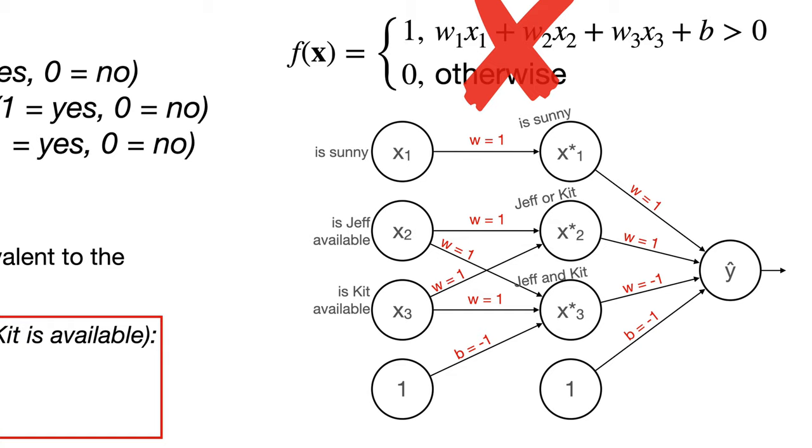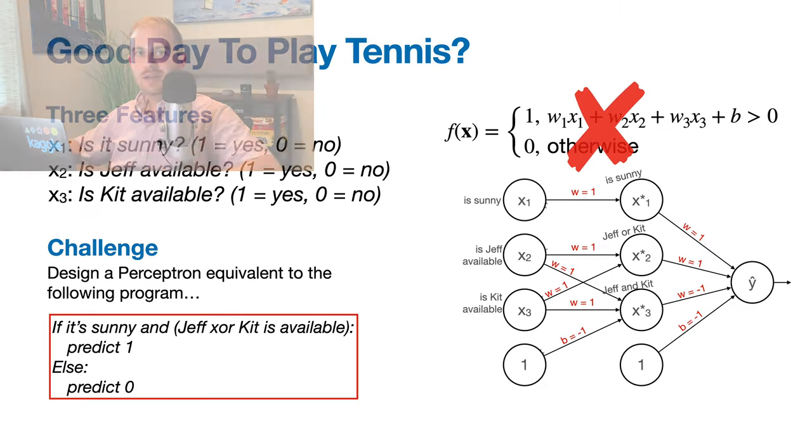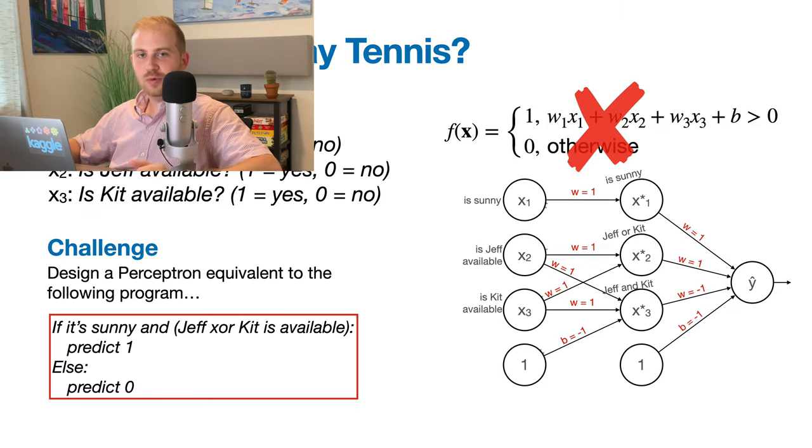If you need to, pause the video and run through some cases to convince yourself this is true. Also note that I could have inserted lines like this to indicate weights with value 0, but I excluded them to keep the picture simple. Now, take a step back and think about what we've created here. We have a model that can generate complicated non-linear decision boundaries and a really intuitive structure that mimics logic. This model is called a multi-layer perceptron, aka a neural network.